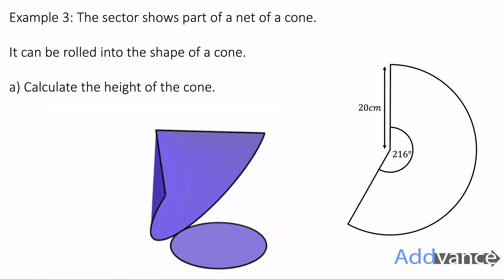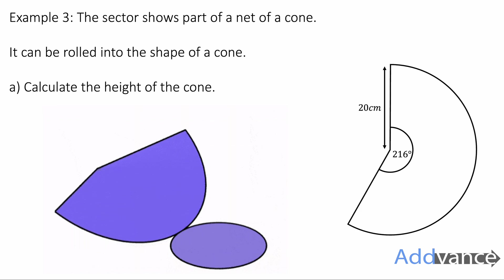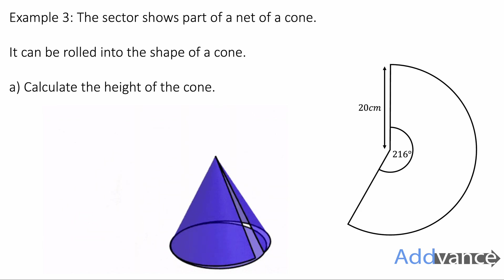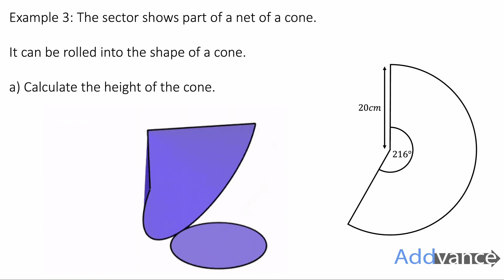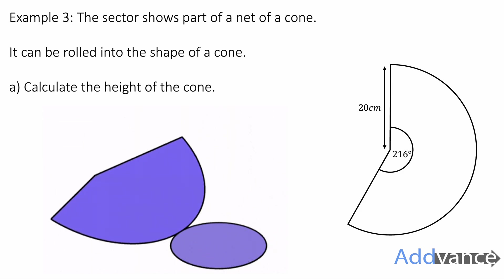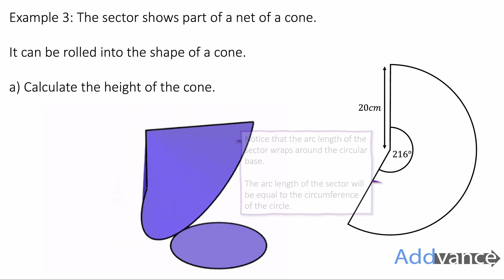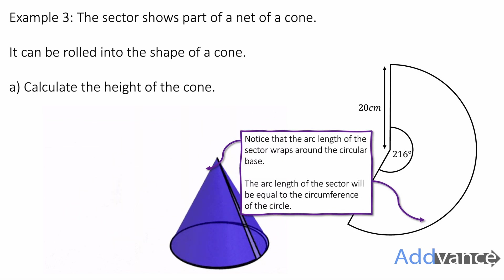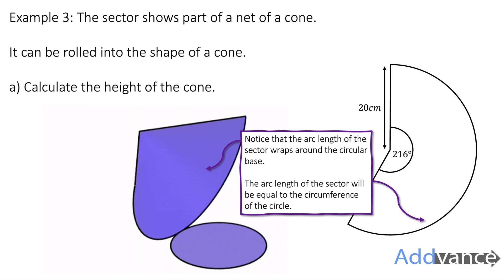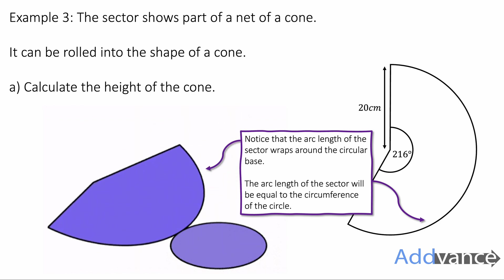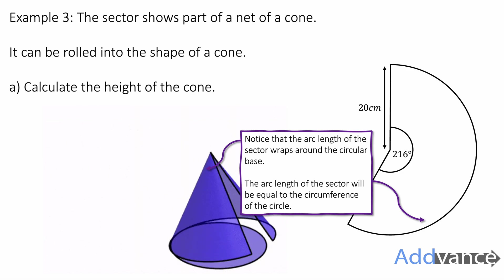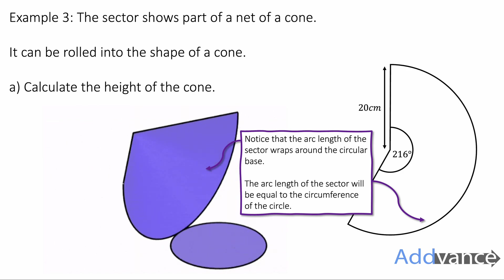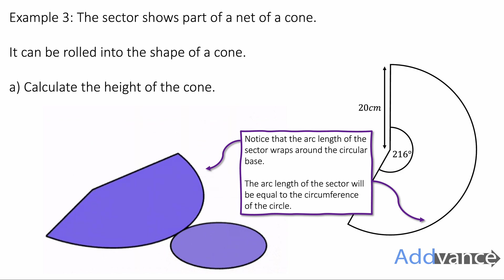Well, the first thing to realize here is that the net of the cone looks like this: it's a circle and it's a sector. And this shows us the sector that is the curved part of the cone when it all folds together. And the outside, the arc length of the sector, will wrap around the circular base of the cone. And so the arc length of the sector will be the same length as the circumference of the circle on the bottom. We're going to use this to solve this question.